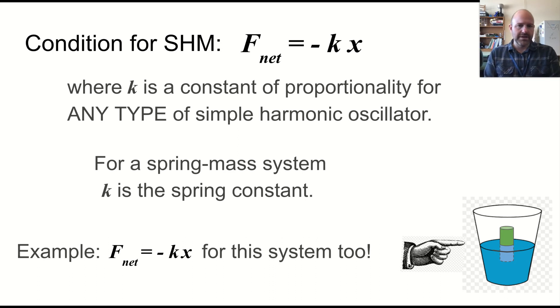So it doesn't really matter what it is. In this picture, you see an object that can bob up and down in the water. The buoyant force of the displaced water does that. And so it still follows this format. So anything that follows this should be able to be described as a simple harmonic oscillator.